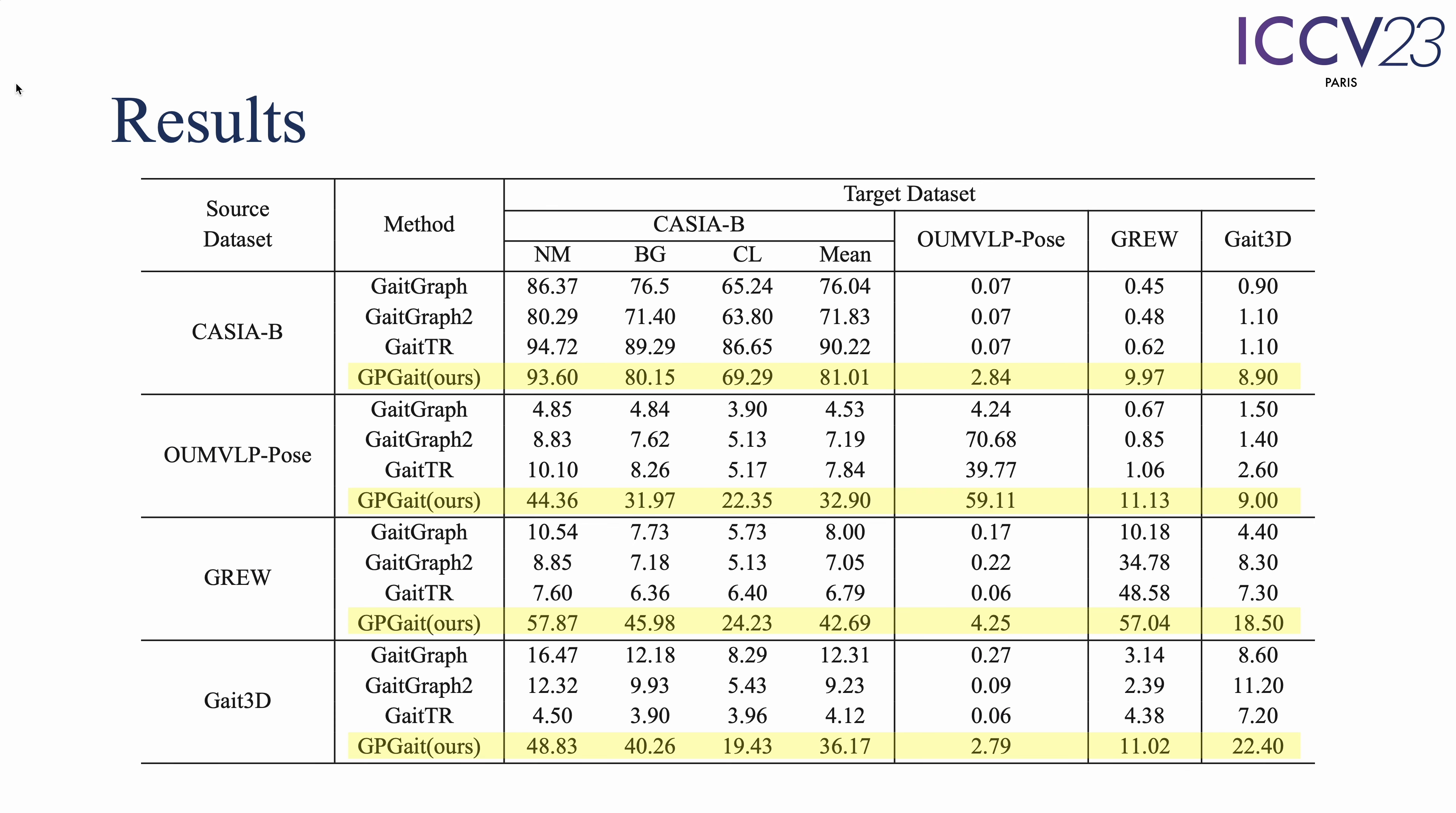Experiments on four public gait recognition datasets—CASIA-B, OUMVLP-POSE, GAIT3D, and GRU—show that our model demonstrates better and more stable cross-domain capabilities compared to existing skeleton-based methods, achieving comparable recognition results to silhouette-based ones.